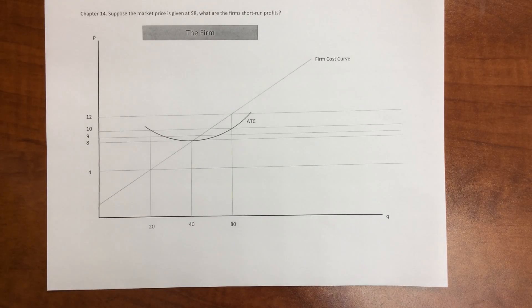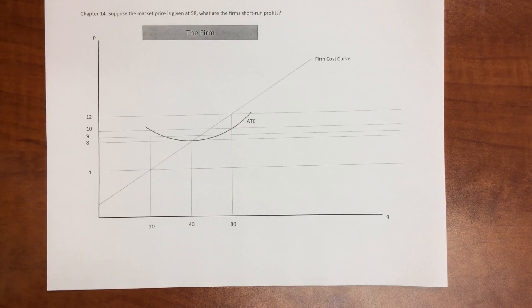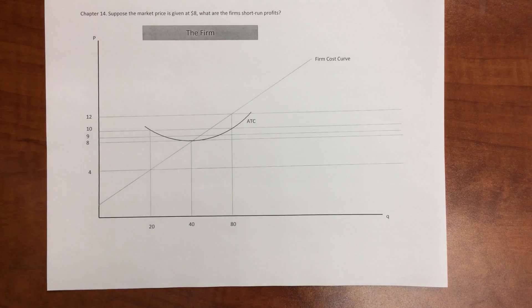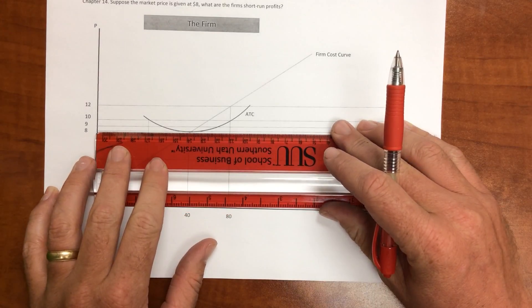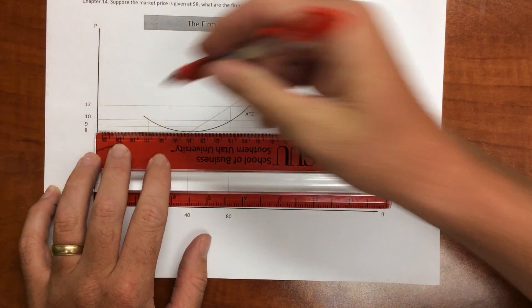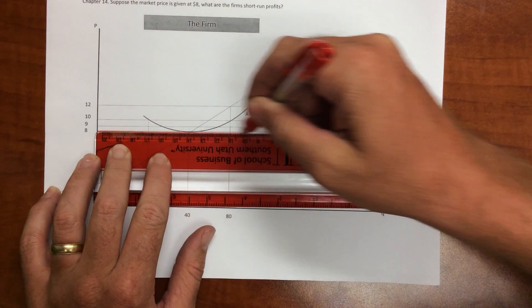Here's a question from Chapter 14 where we have the firm and we're looking to identify how does the firm respond and what are the profits of the firm when the market price is given at $8. So I'm going to draw out what happens when that market price is $8. So there's the $8 mark right there.